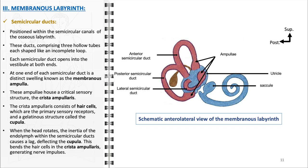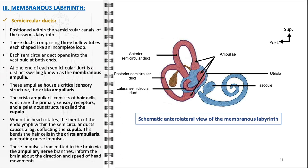When the head rotates, the inertia of the endolymph within the ducts causes it to move at a different speed than the ducts themselves, resulting in deflection of the cupula and bending of the hair cells within the crista ampullaris. These hair cells generate nerve impulses transmitted to the brain via the ampullary nerve branches, providing information about the direction and speed of head movements. The semicircular ducts, with their membranous ampullae and the crista ampullaris, enable the precise detection of head rotations, contributing significantly to our ability to navigate and interact with our environment.